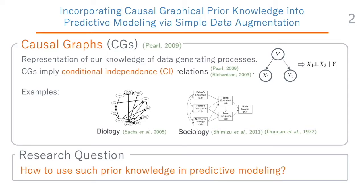When a causal graph is available, for example obtained from domain experts, we can infer the conditional independence relations that should hold in the data distribution. For example, if we have a causal graph that looks like the one at the top, indicating y causes x1 and y causes x2, then this graph implies the conditional independent statement that x1 and x2 are independent given y.